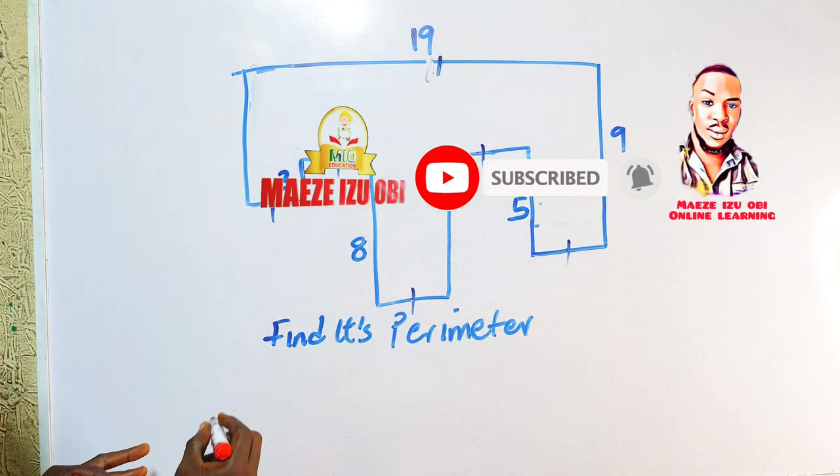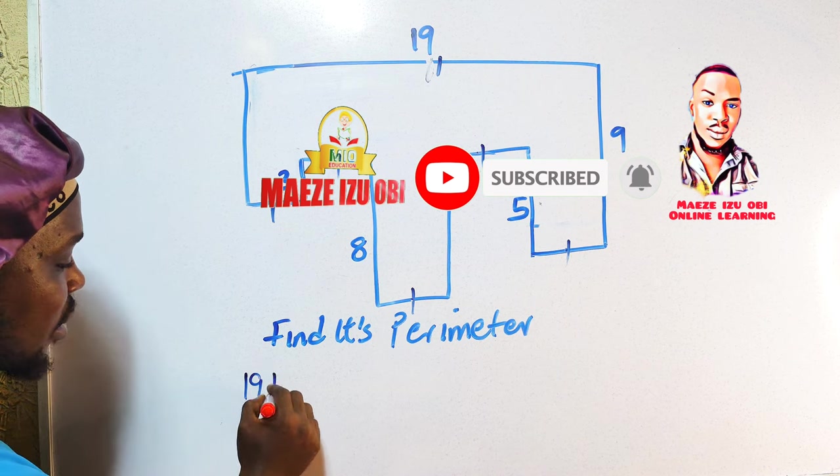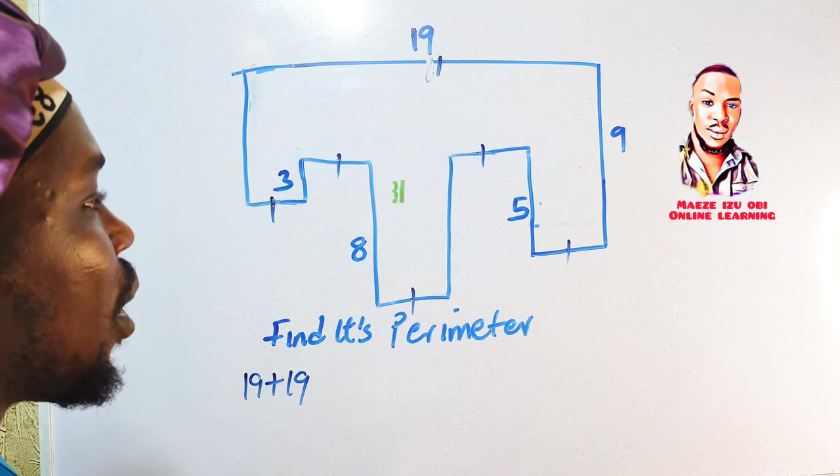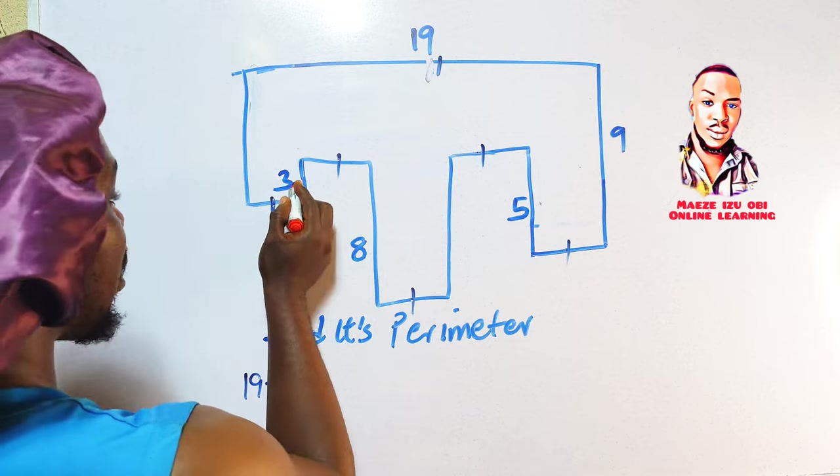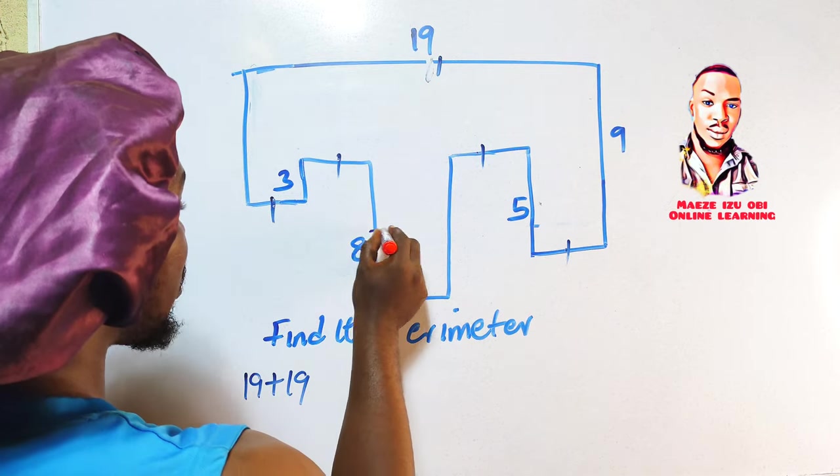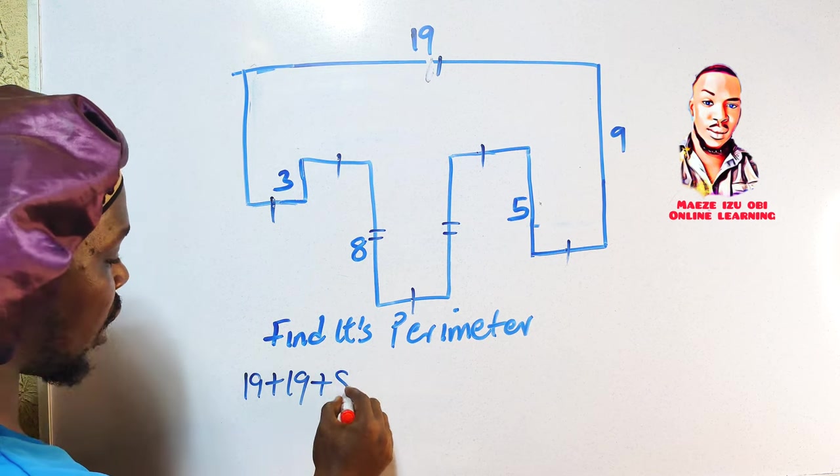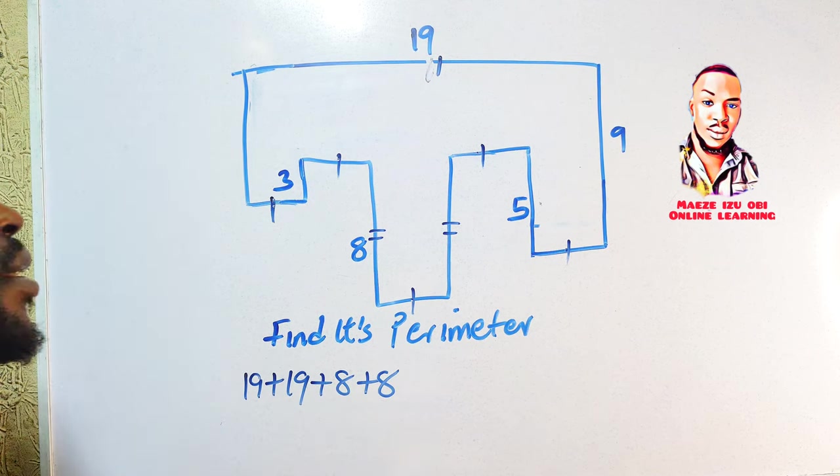Making it we have two 19s, so we are going to write 19 plus 19. Now the next thing we need to do is they have given us 3, they have given us 8. Now this 8 is equal to this side and therefore becomes plus 8 plus 8.